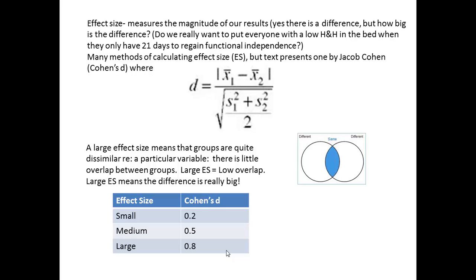If we calculate the effect size for the previous t-test on anemia and falls and find that it's 0.12, this is a small effect size. Rather than putting all anemic patients in bed, perhaps we need to look at other factors that are contributing to increased fall rates.